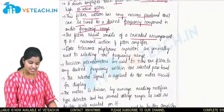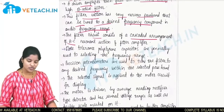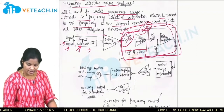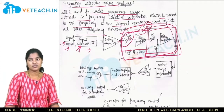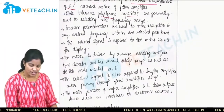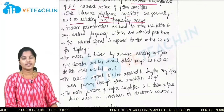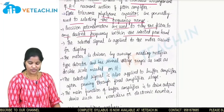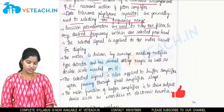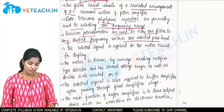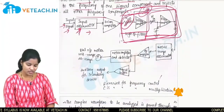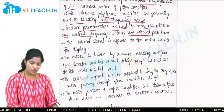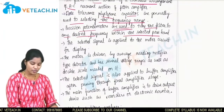The filter circuit contains a cascaded arrangement of RC resonance circuits — one RC circuit followed by another RC circuit joined together forming the cascaded arrangement. Close tolerance polystyrene capacitors are generally used for selecting the frequency ranges. Precision potentiometers are used to tune the filter to the desired frequency within the selected passband by varying the resistance values.